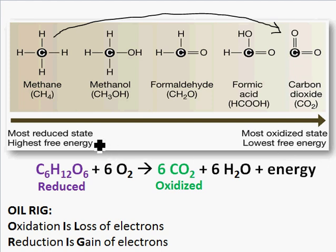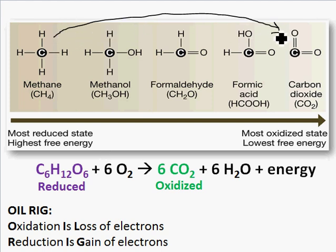Carbon dioxide is a more oxidized state and it's lower energy. Methane is reduced and has lots of energy. What's happening during this process is these bonds are rearranged, electrons are given off, and they go to oxygen — oxygen grabs the electrons and is reduced. To burn methane, you need oxygen because it grabs the electrons.